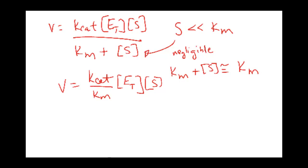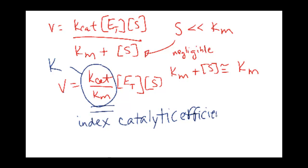So the ratio of k-cat to Km gives you an index of the catalytic efficiency. It's basically that's your new k for the velocity equation, the rate equals k times the products. So it's an index for your catalytic efficiency.